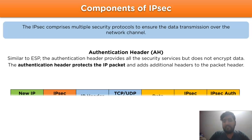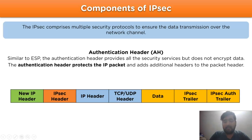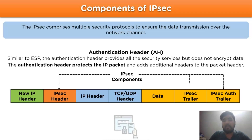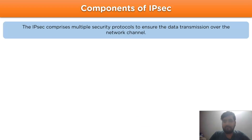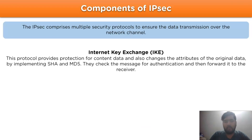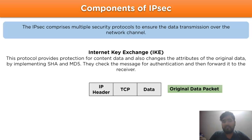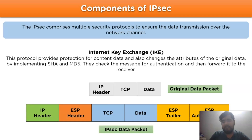The Authentication Header protects the IP packet and adds additional headers to the packet header. The modified IP datagram includes IP components at specific positions along with authentication of data services over the network channel. Moving on, we have Internet Key Exchange (IKE). This protocol provides protection for content data and changes the attributes of the original data by implementing SHA and MD5 algorithms. It also checks the message for authentication before forwarding it to the receiver. For example, the original data packet contains an IP header, TCP/UDP, and data, whereas the modified IPSec data packet has an ESP header added between the IP header and the TCP protocol.